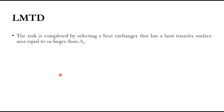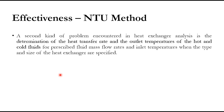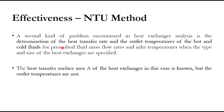This is the overall summary of the LMTD method: we are given or we know the values of inlet and outlet temperatures of hot and cold fluids, or if there is any unknown we calculate it, and finally we calculate the heat transfer area. However, in the case of the Effectiveness-NTU method, we know the value of heat transfer area but we do not know the outlet temperatures of hot and cold fluids.